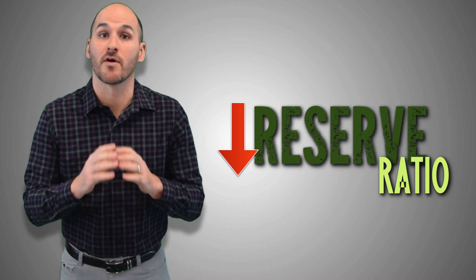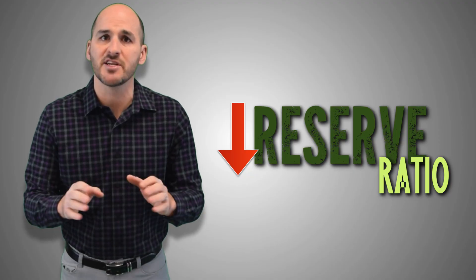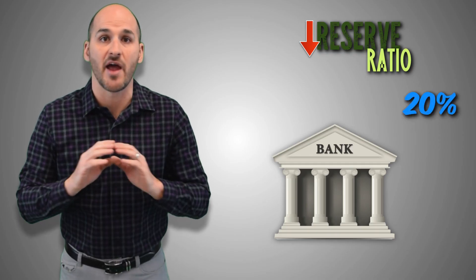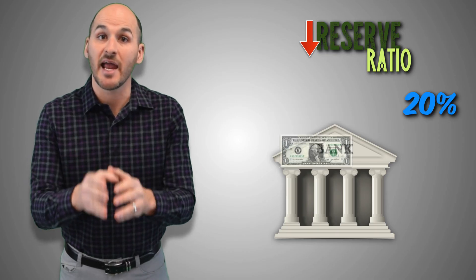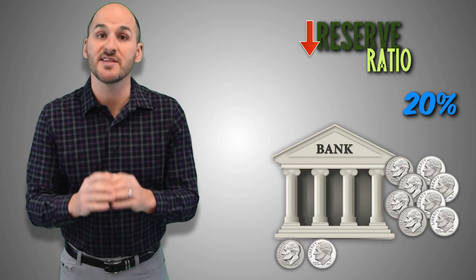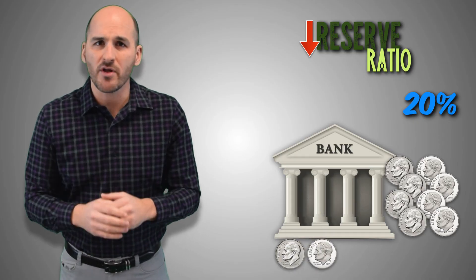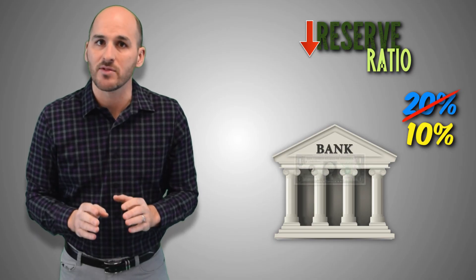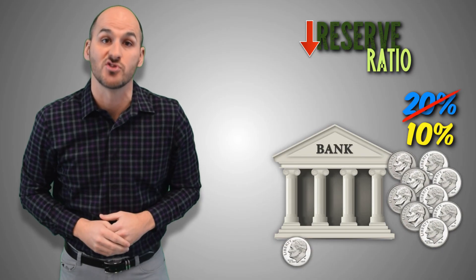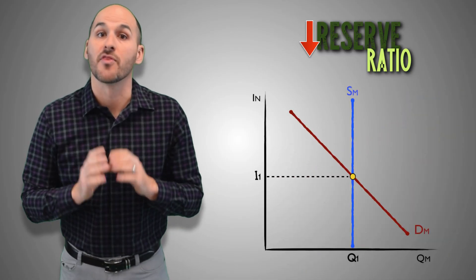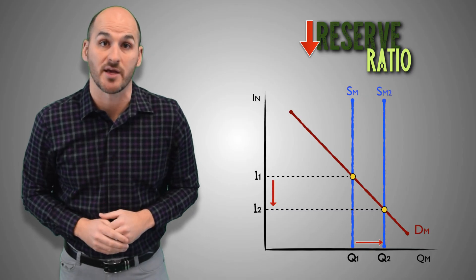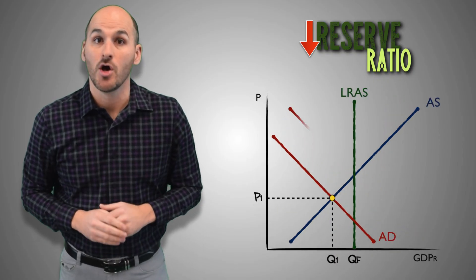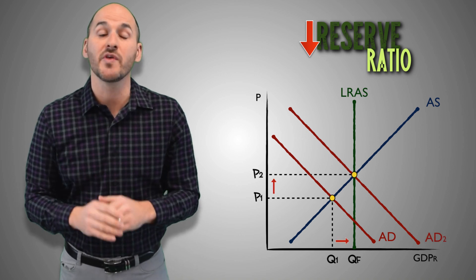Decreasing the reserve ratio means banks can now lend out more of the reserves they have on hand in their vaults, as well as a greater percentage of every demand deposit that comes through their doors. For example, if the Fed set the reserve ratio at 20%, then banks would be required to hold 20% of every demand deposit made by consumers. That means they can lend 80 cents of every dollar to firms and consumers in the form of new loans, but they must hold 20 cents of every dollar in reserve and cannot lend it out. If the Board of Governors decreases the reserve ratio to 10%, banks could immediately release a portion of the reserves that they are currently holding and, in addition, can now lend out 90 cents of every new dollar in demand deposits to firms and consumers. As banks lend out greater quantities of loanable funds, the money supply increases, leading to a decrease in the nominal interest rate in the money market. This increase in investment spending will cause an increase in aggregate demand, which will cause real GDP growth and return the economy to full employment.